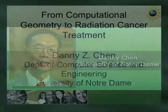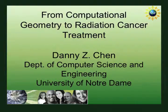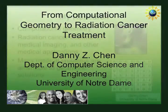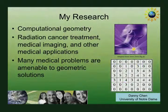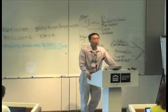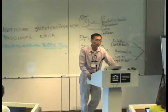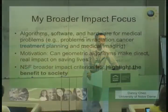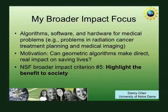I am Danny Chen from University of Notre Dame. My research area is computational geometry, which is one of the theoretical areas designing algorithms for solving geometric problems. Many applied problems, in particular medical problems, have nice geometric structures and are suitable for geometric solutions. For example, I am going to show you medical imaging problems and radiation cancer treatment problems.